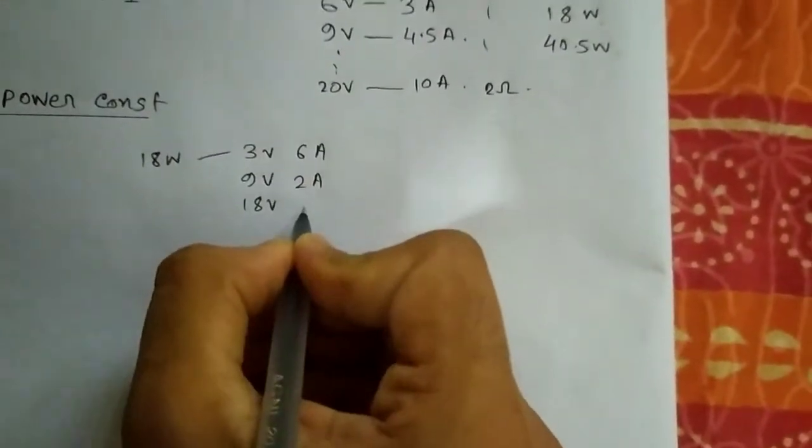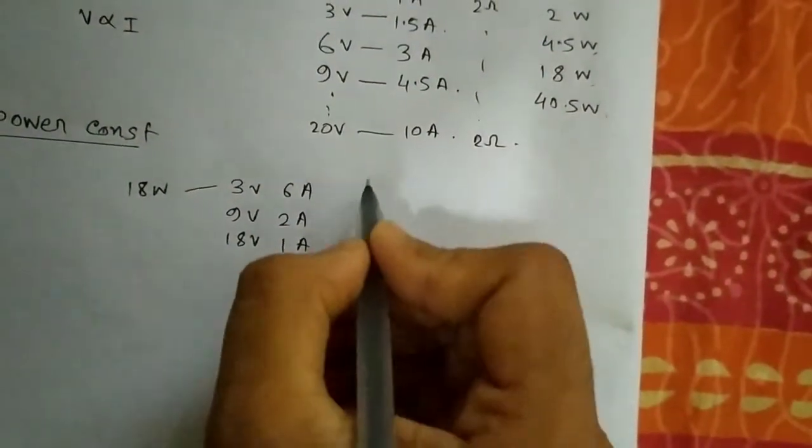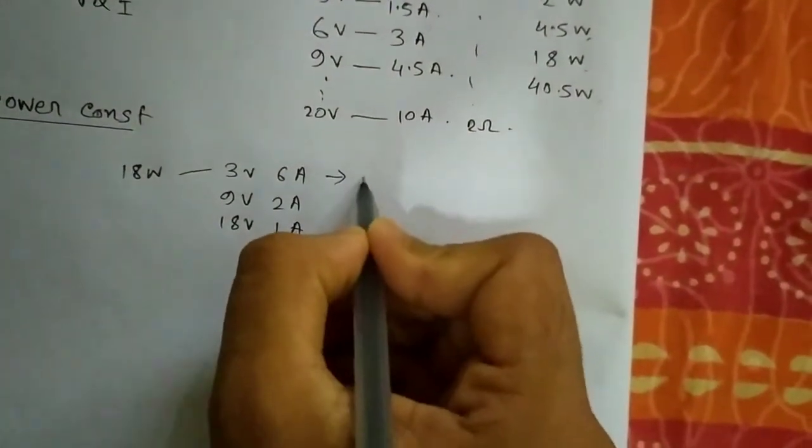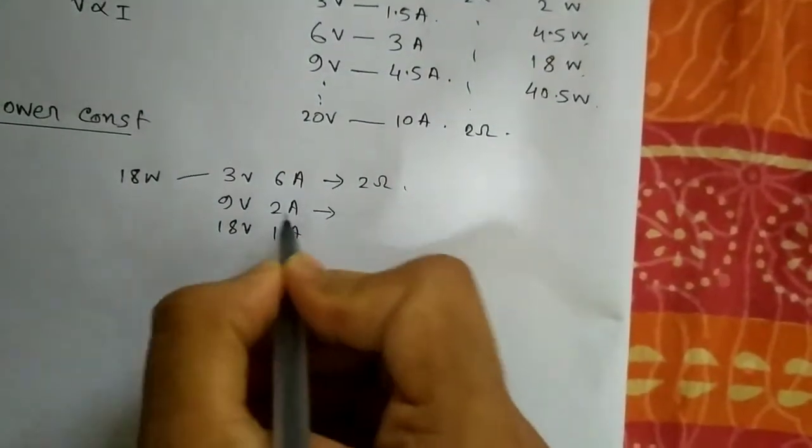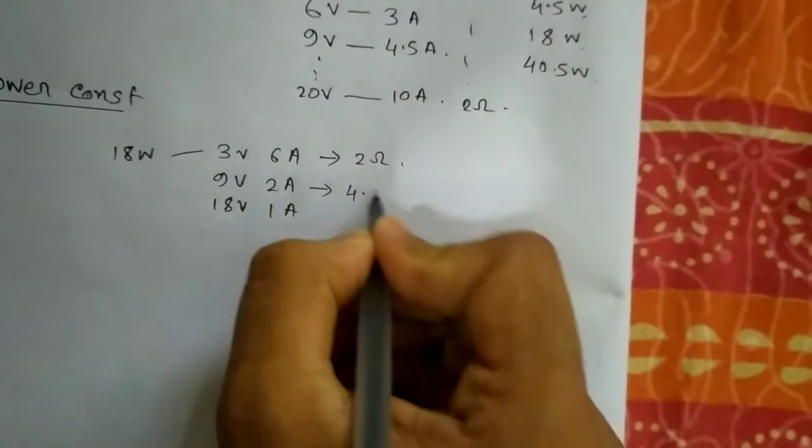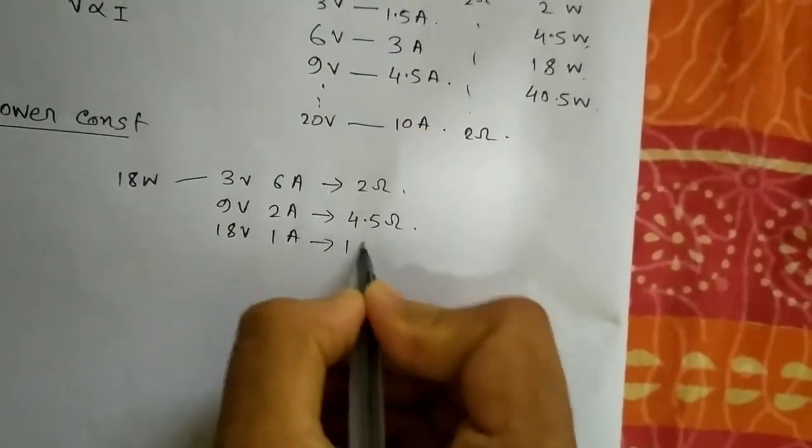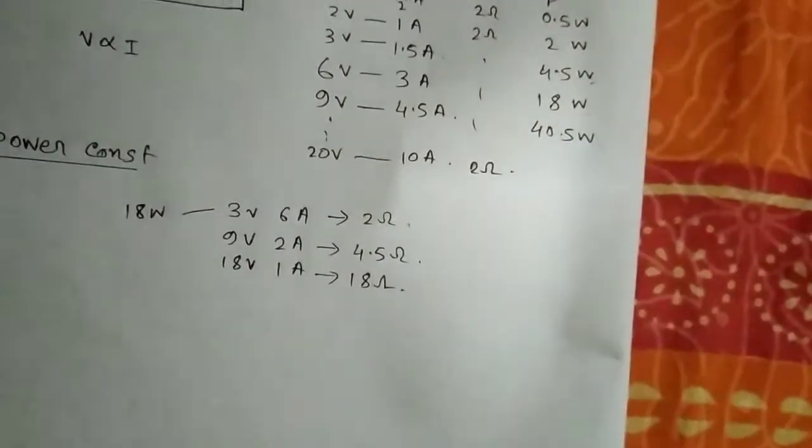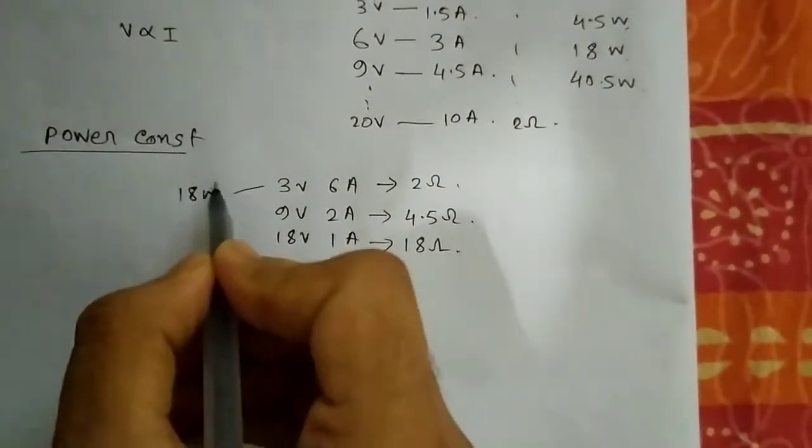Anything you want, but the problem is here only you will get 2 ohms value. For this you will get 4.5 ohms value, and for this one you will get 18 ohms value. So you are seeing that to maintain a particular power, we have to vary the resistance.